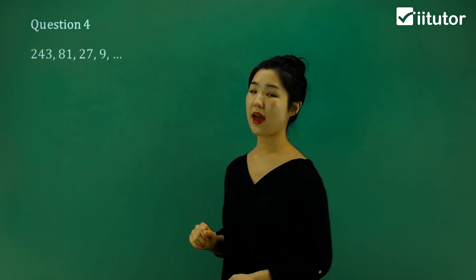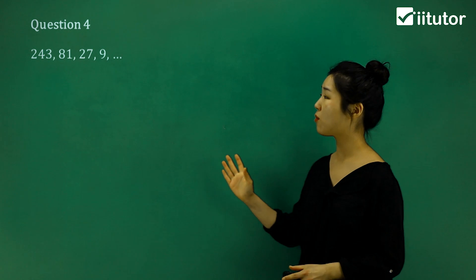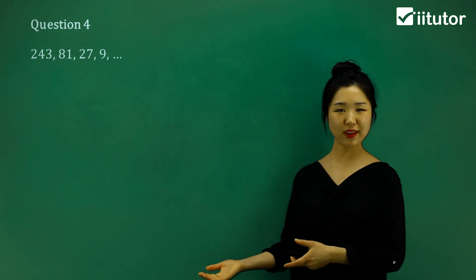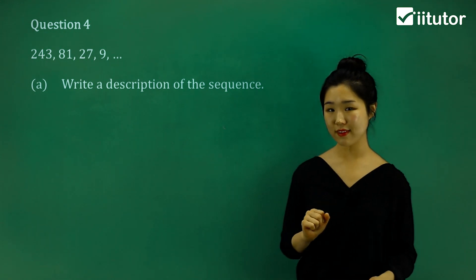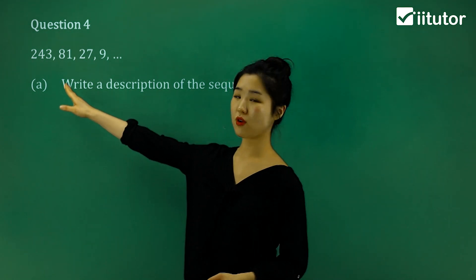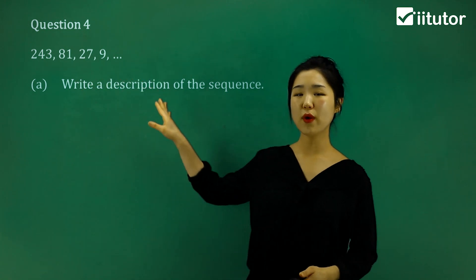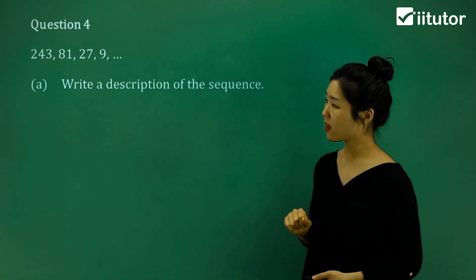Question 4. This time it's 243, 81, 27, 9. It's going down quite rapidly, isn't it? So when I ask you to write a description for the sequence, first of all, I know that the first term is 243. And because we're going down rapidly, I'm thinking we're going to be dividing.